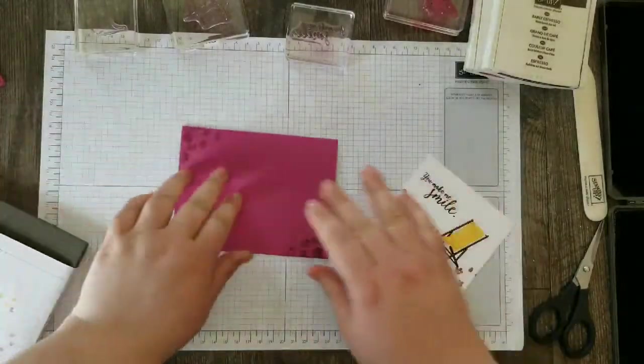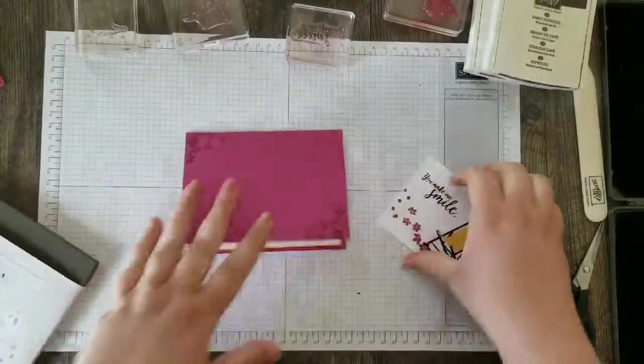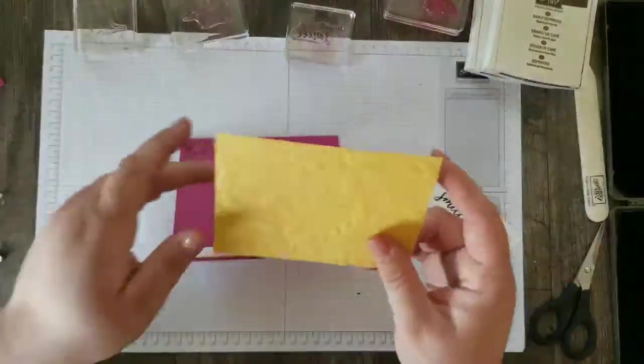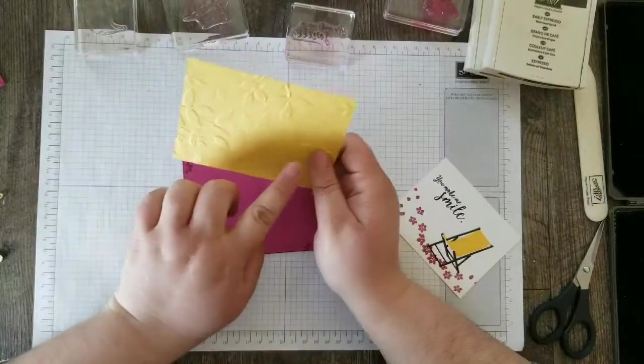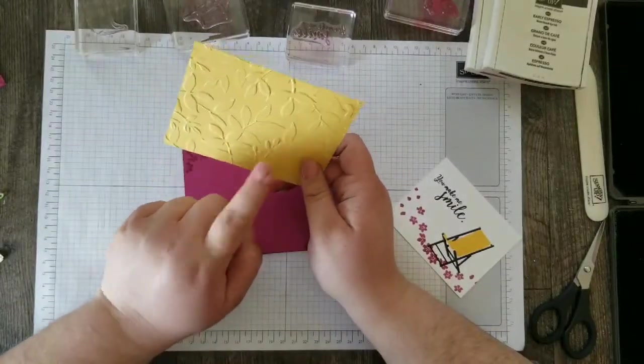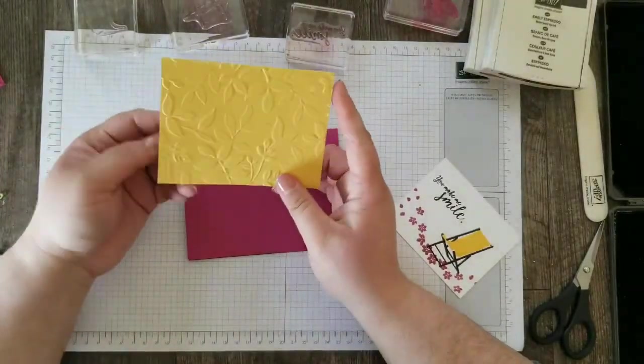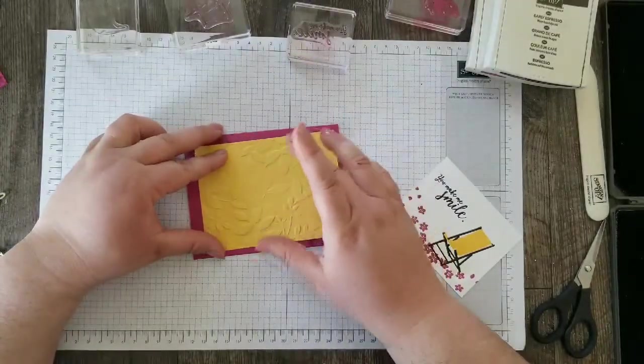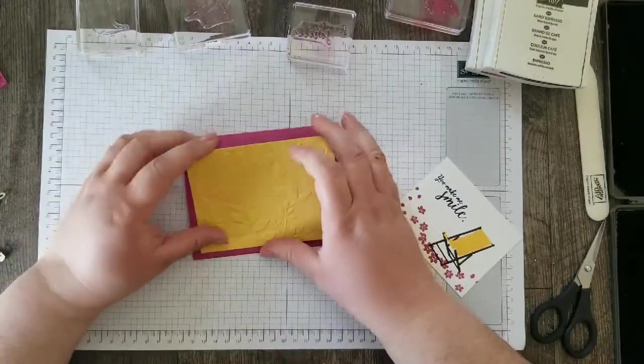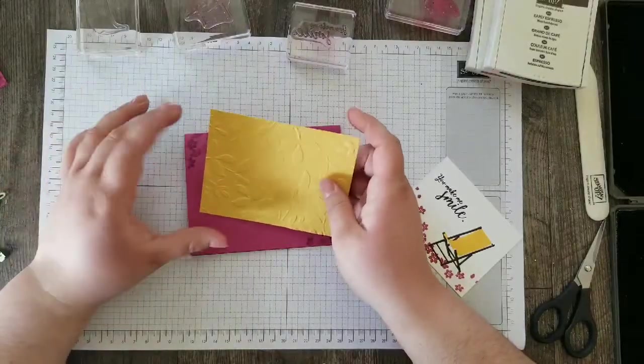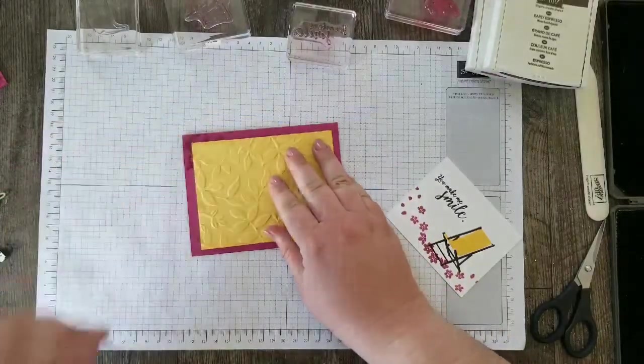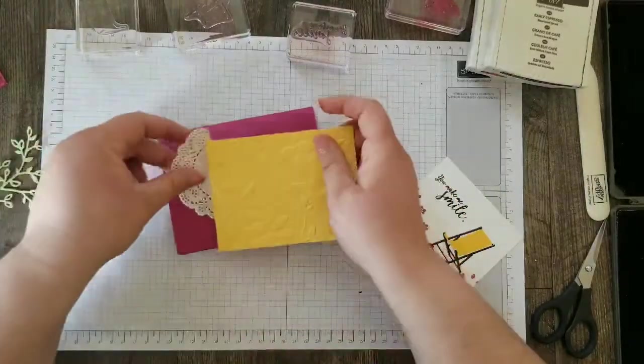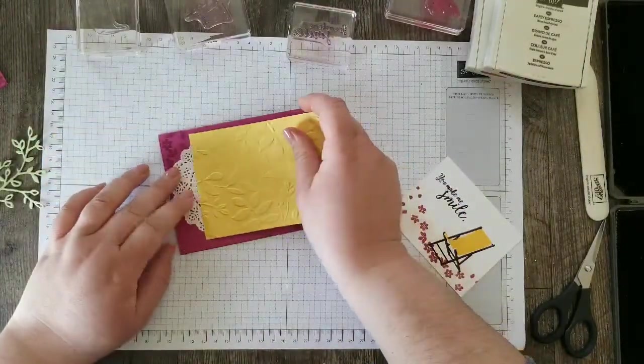So now that we've got our card front layer stamped, we're ready to get putting our card together. So we've got our card base. And now using my layering, I think it's called Layered Leaves embossing folder, I embossed a piece of Daffodil Delight. It's a half inch smaller than the card base. So it's five inches by three and three quarters.